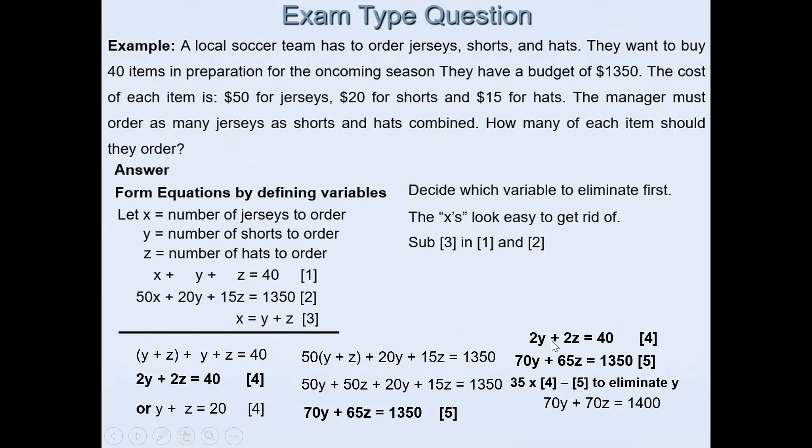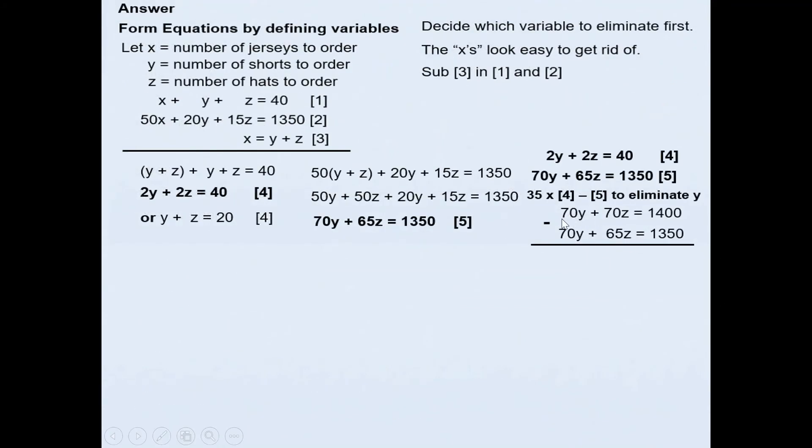If I multiply equation 4 by 35, I get 70y + 70z = 1400. Then I'll subtract the fifth equation: 70y + 65z = 1350. If I quickly simplify that, 70y - 70y gives 0, so 70 - 65z is 5z, and 1400 - 1350 is 50. Then you can solve for z. z comes to 10.